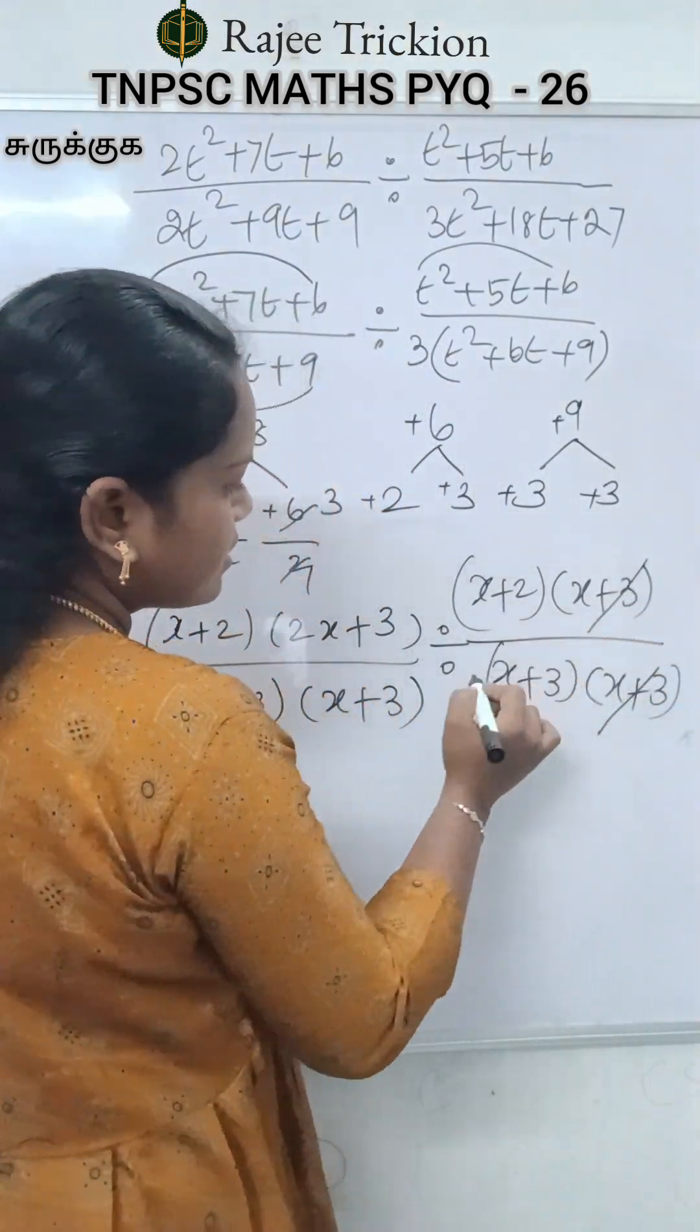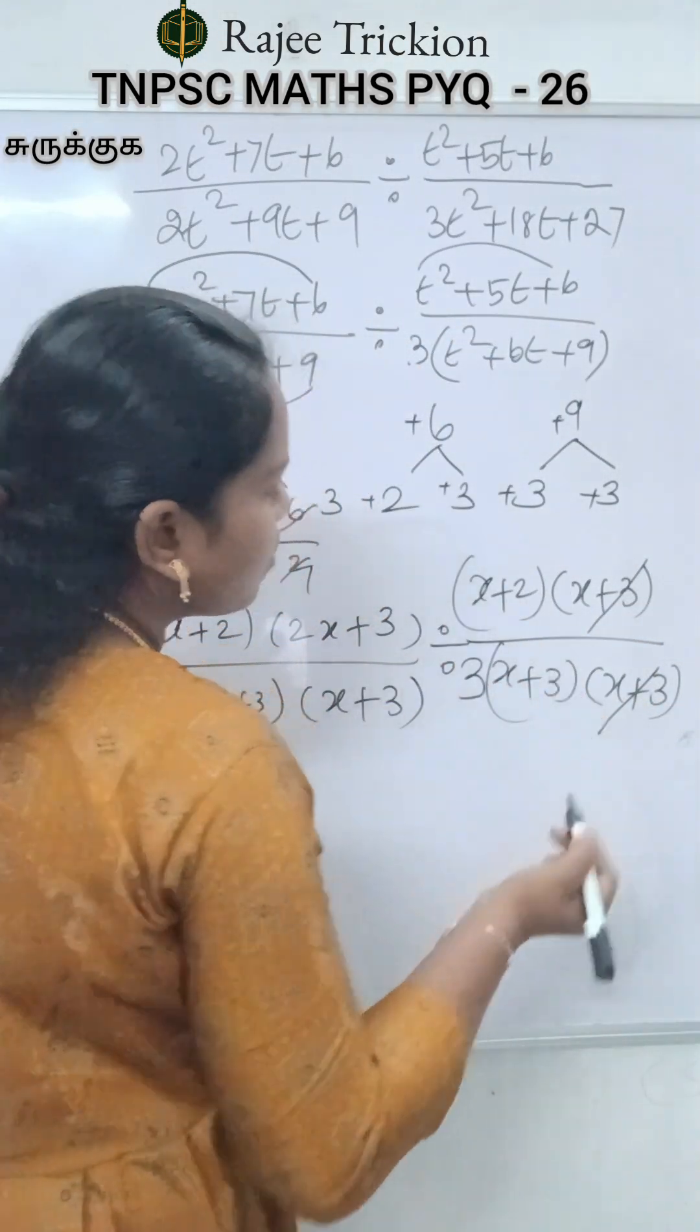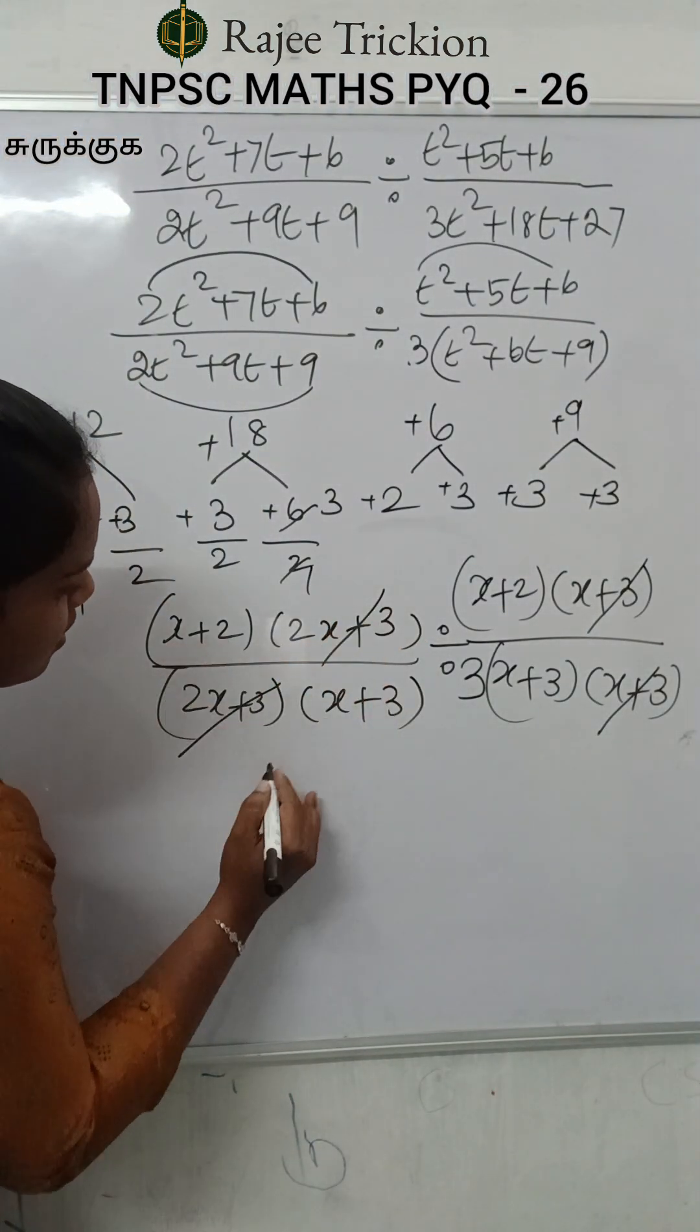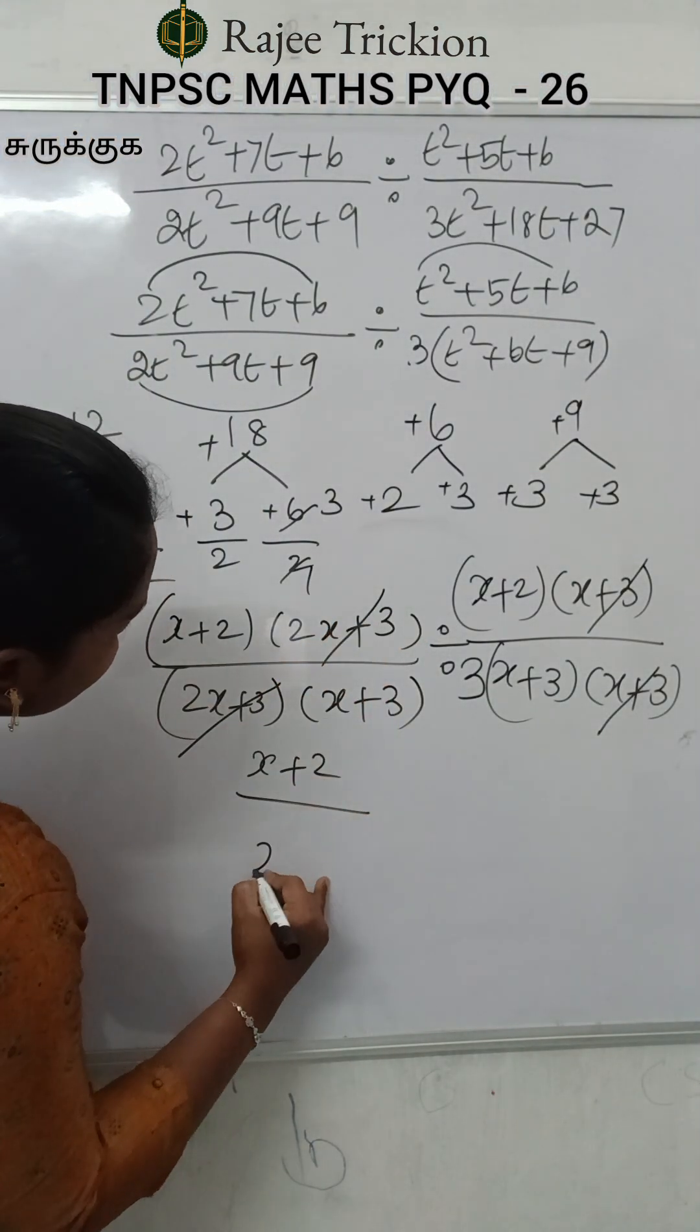So here x plus 3 can be changed. Here is x plus 3 to x plus 3 cancels. Here is x plus 2 divided by x plus 3.